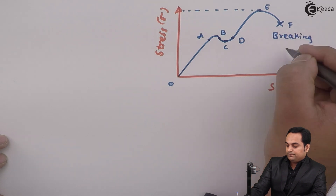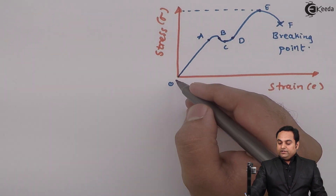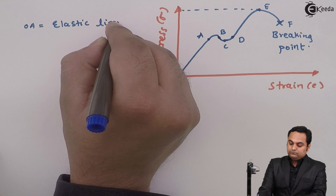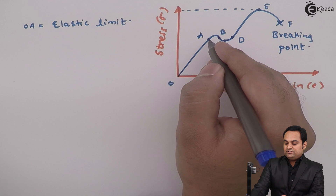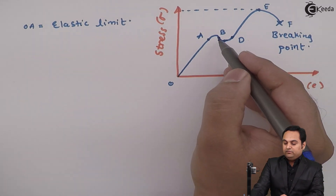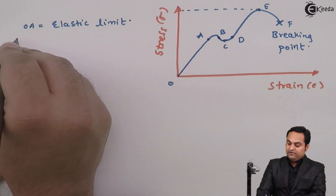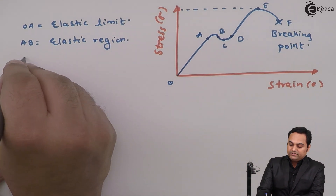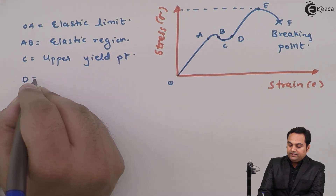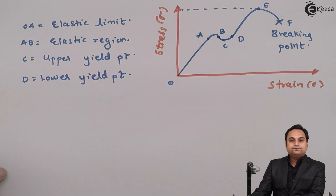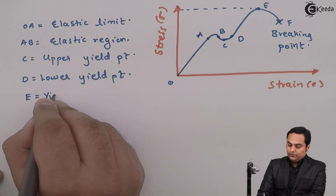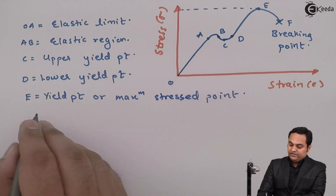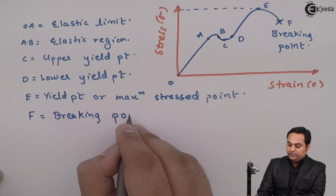Looking at the stress-strain graph: from 0 to A is called the elastic limit. From A to B is another elastic region where if load is removed, the material returns to its original shape. Point C is called the upper yield point and D is called the lower yield point. Point E is called the maximum stress point.